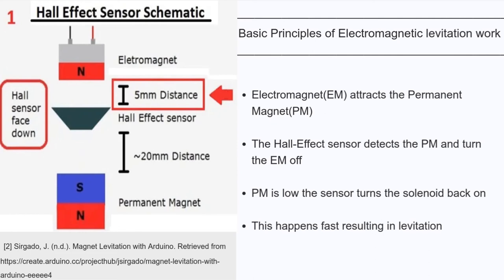Now that we know how an electromagnet and a hall effect sensor work, let's look at the basic principle of how electromagnetic levitation works. This works by having the electromagnet attract the permanent magnet, and when the magnet is close enough, the hall effect sensor detects it and turns the solenoid off. So the magnet falls back down. And when this magnet is very low, the sensor doesn't detect it anymore and turns the coil back on, which attracts the magnet again. This happens so fast and we see magnetic levitation.